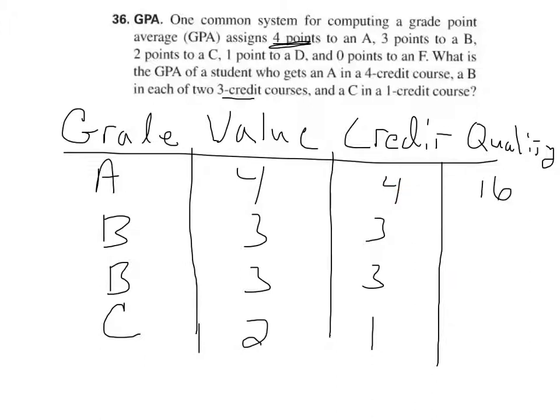So that gave me 16 quality points, and then for the next one, three times three is nine, and another nine, and then we get two. And then we're going to find the sum of the credits and the sum of the quality points.